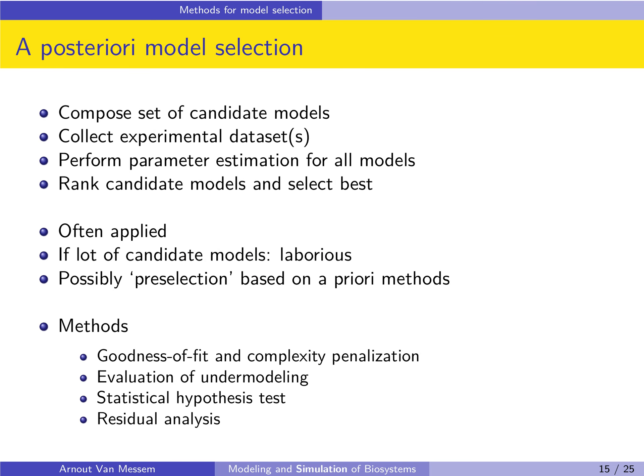The most common approach to a posteriori model selection is: first, compose a set of different candidate models; then collect experimental data; perform a parameter estimation for each candidate model; then rank these models and select the best. However, if you have a lot of candidate models this is quite laborious. So it is possible to do a pre-selection based on a priori methods, and then afterwards do an a posteriori model selection to get a more fine-tuned, more detailed model.